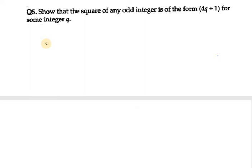Hello everyone, let's start with question number 5 of exercise 1.3. It says show that the square of any odd integer is of the form 4q plus 1 for some integer q.